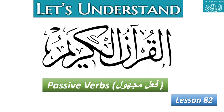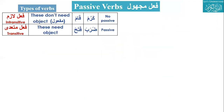Majhul is from jahala yajhalu — jahil, majhul. Jahala means he was ignorant; majhul means the thing that is not known. So in these verbs, the doer is not known — that is why they are called fil majhul.